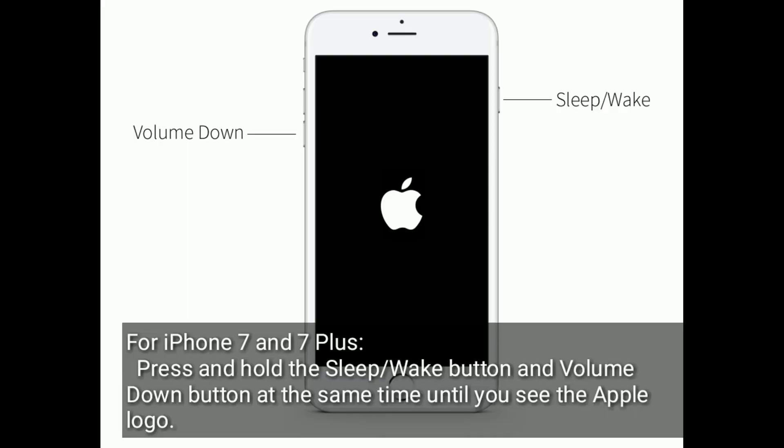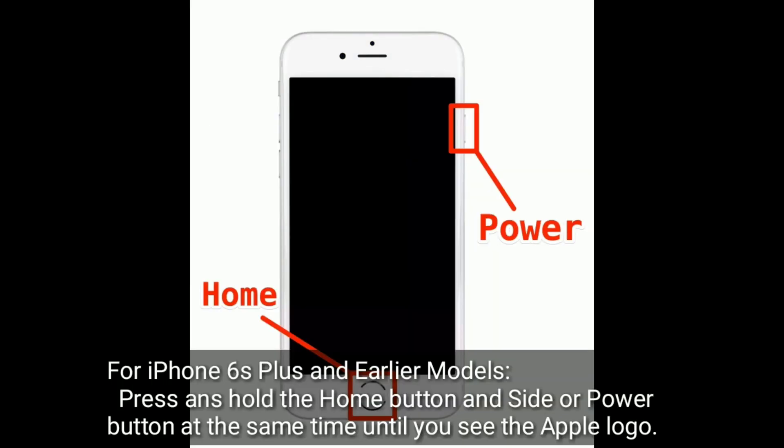For iPhone 7 and 7 Plus: press and hold the sleep or wake button and volume down button at the same time until you see the Apple logo. For iPhone 6s Plus and earlier models: press and hold the home button and side or power button at the same time until you see the Apple logo.